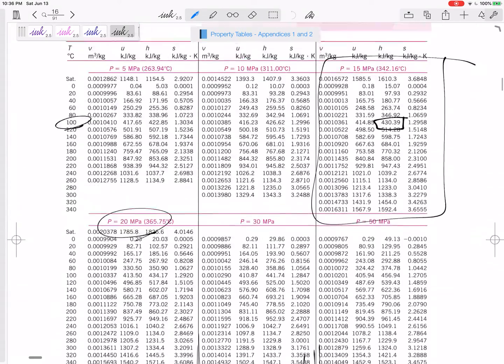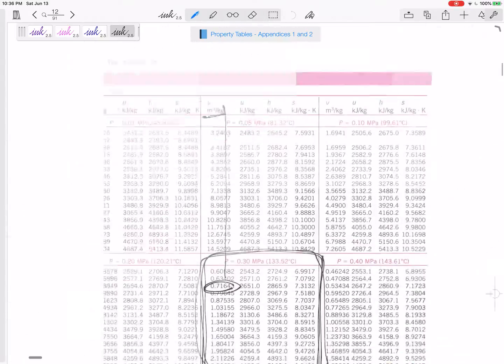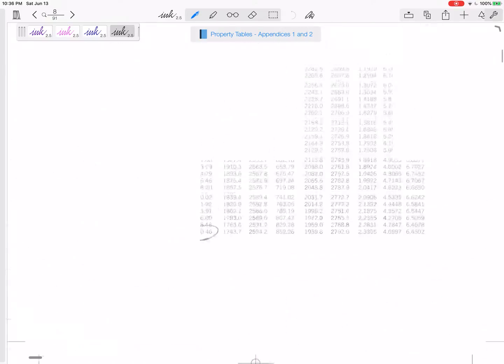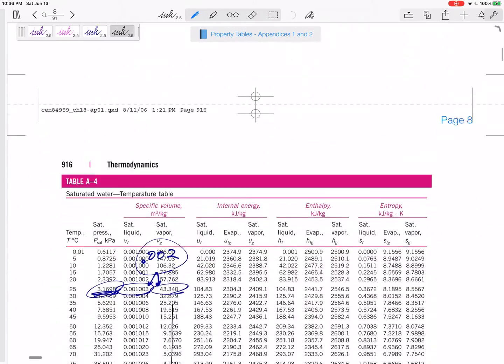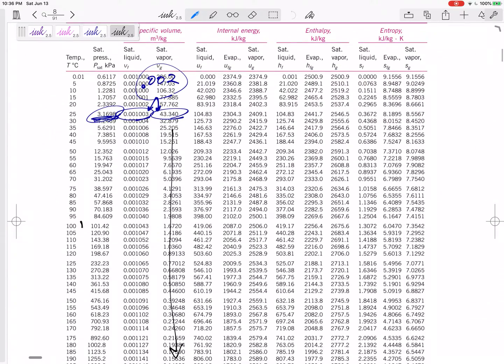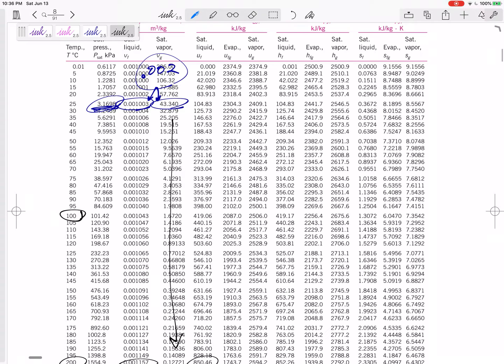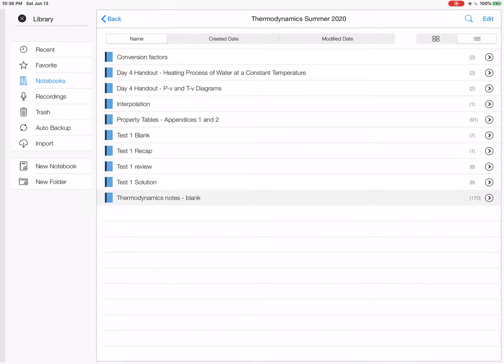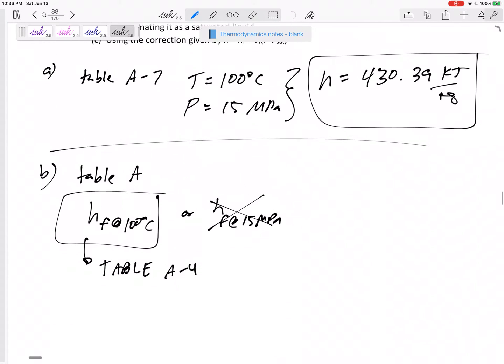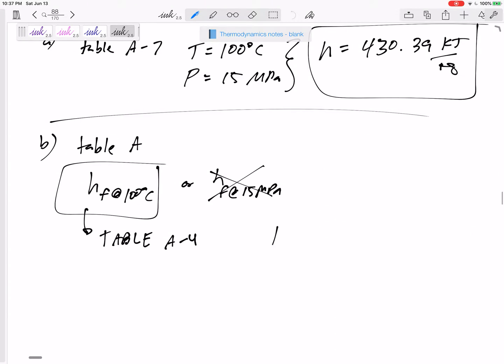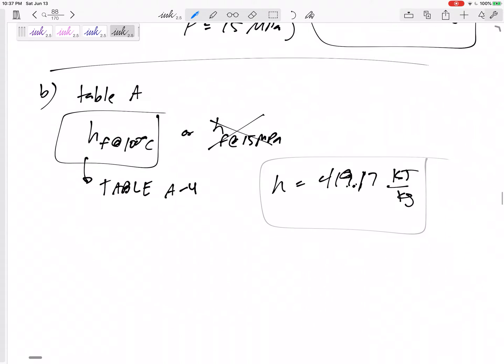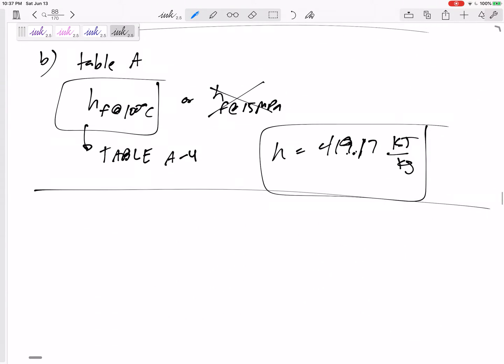Let's go to our property tables. Table A-4, the temperature table at a temperature of 100 degrees C, the H would be 419.17. 419.17 kilojoules per kilogram.